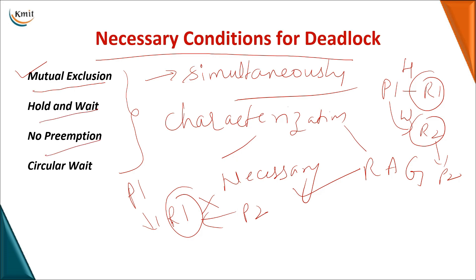The third condition is no preemption. In scheduling we have preemptive and non-preemptive types. Preemptive means a resource allocated to a process can be taken away at any time, whereas non-preemptive means once a resource is allocated to a process, it is completely used by that process. When a resource given to a process cannot be forcibly taken until completion, we call it no preemption, and this leads to a deadlock.